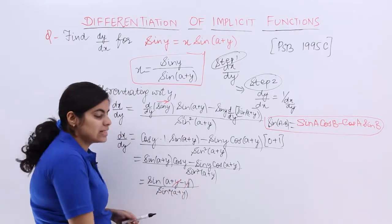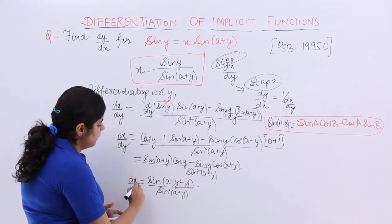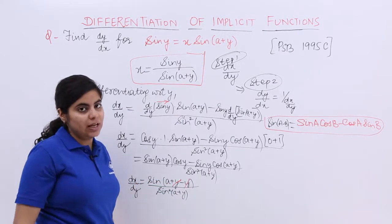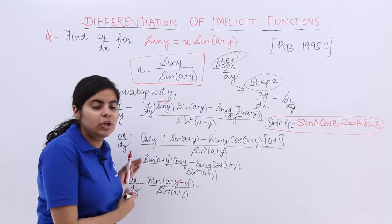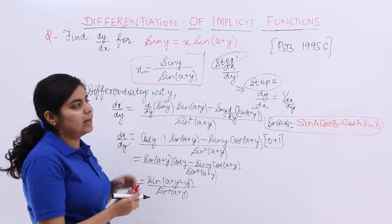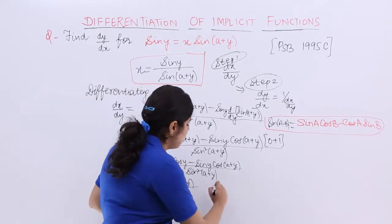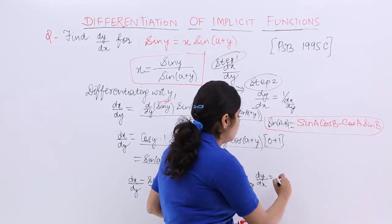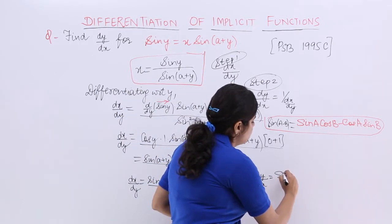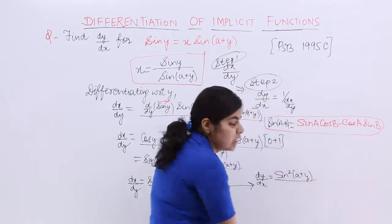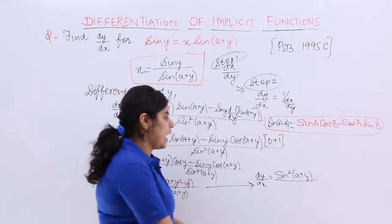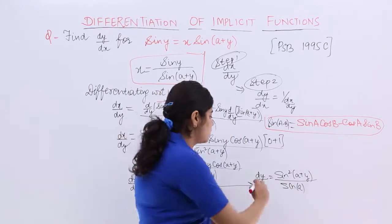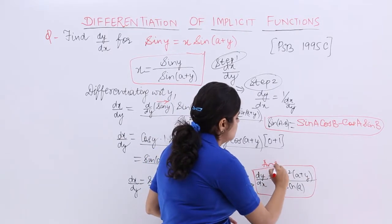Now certain things cancel, so basically my dx/dy is sin a upon sin square(a+y). But please do not leave the answer here because dx/dy was not needed, dy/dx was needed. So directly you can write dy/dx equals the reciprocal: sin square(a+y) upon sin a, and that is your answer.